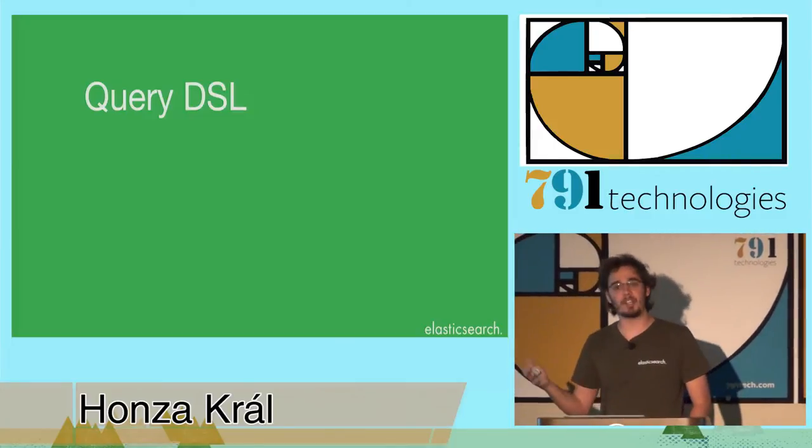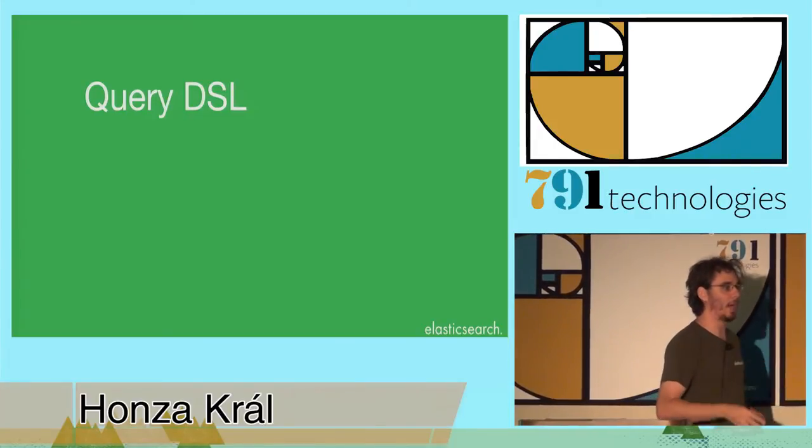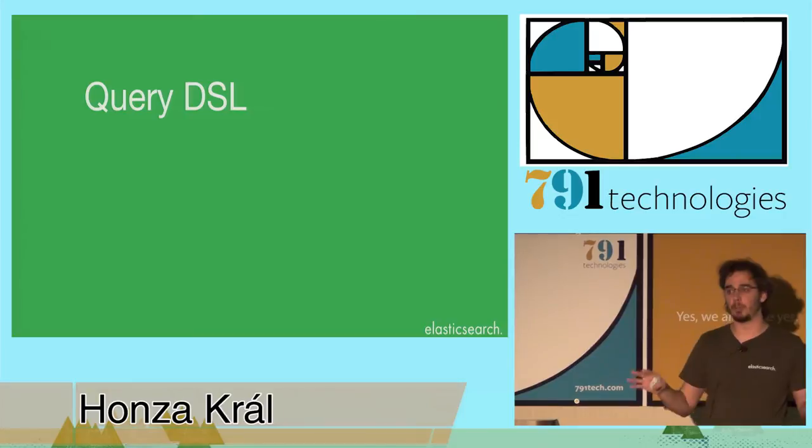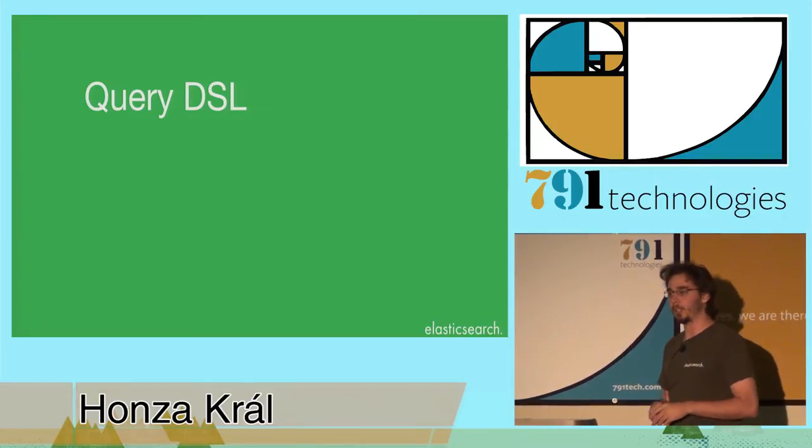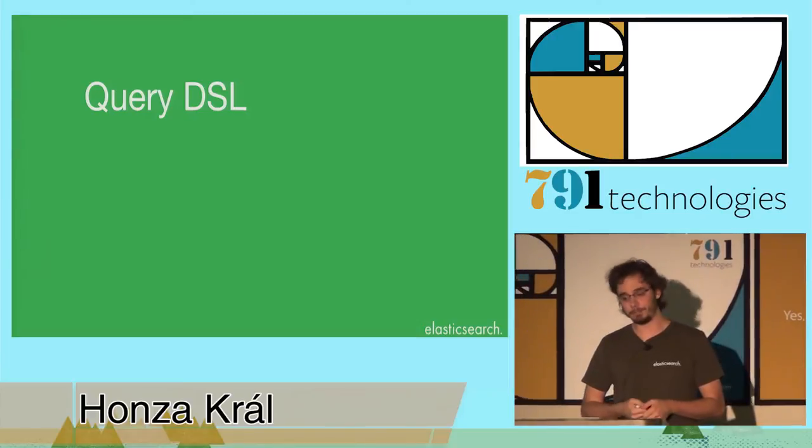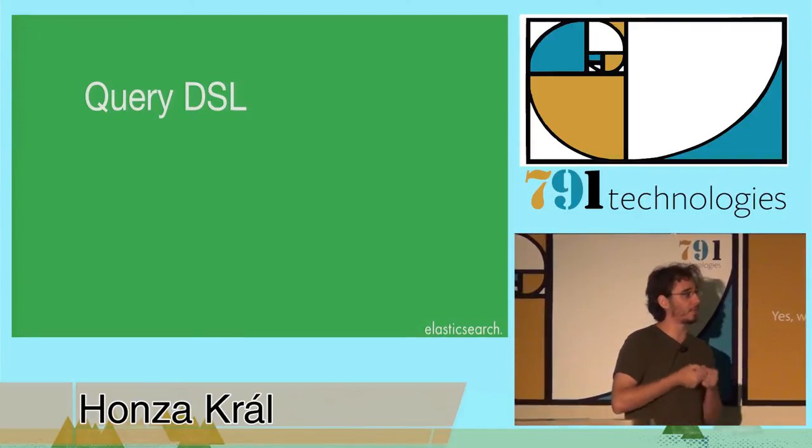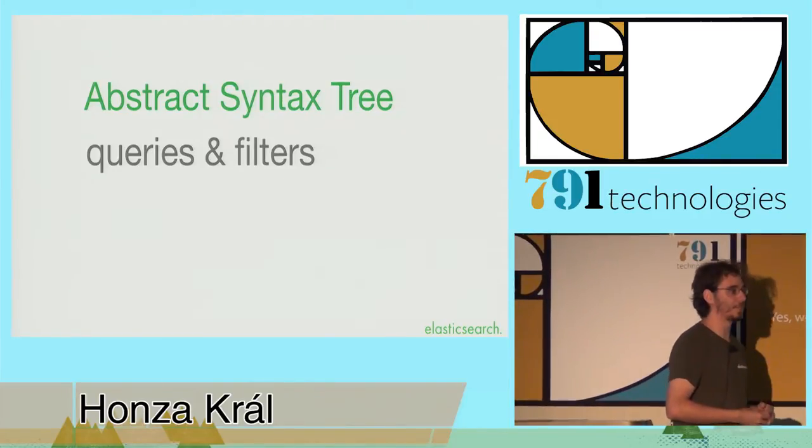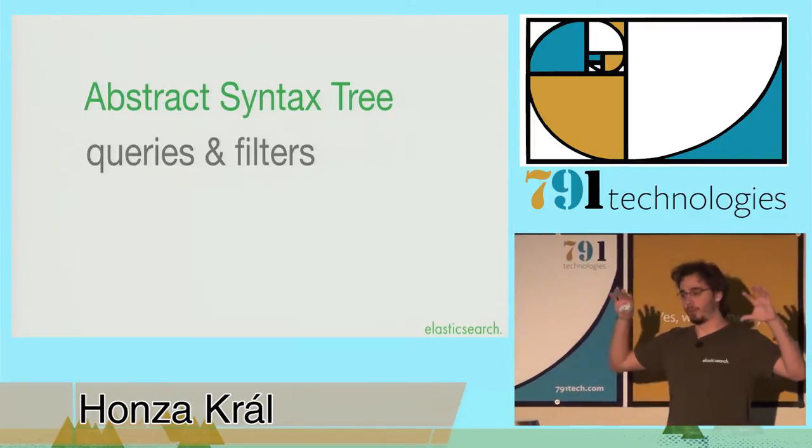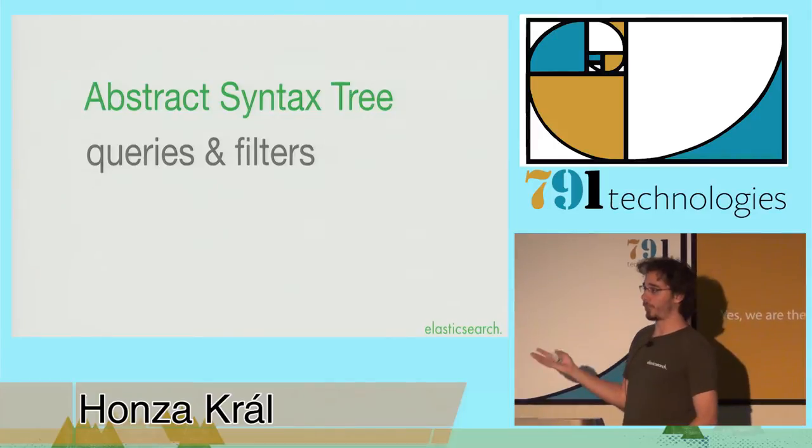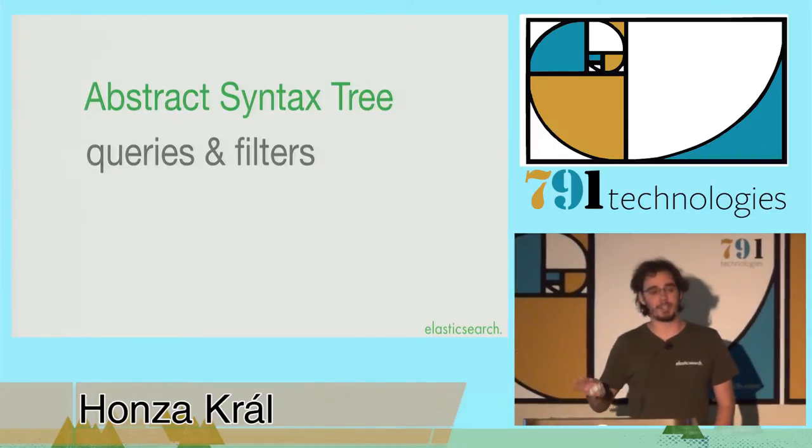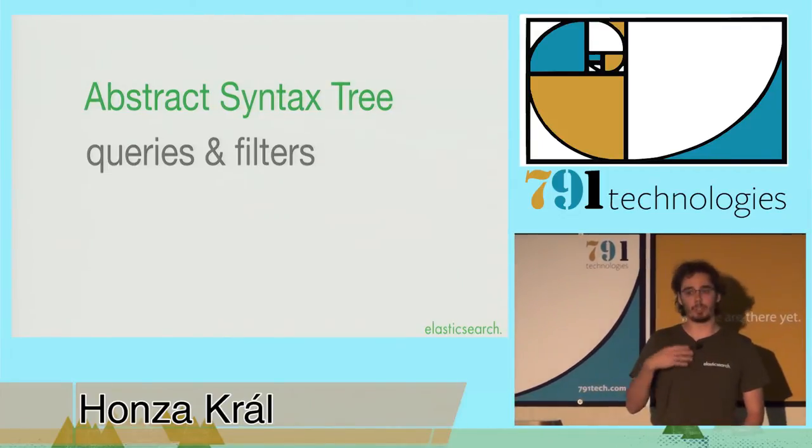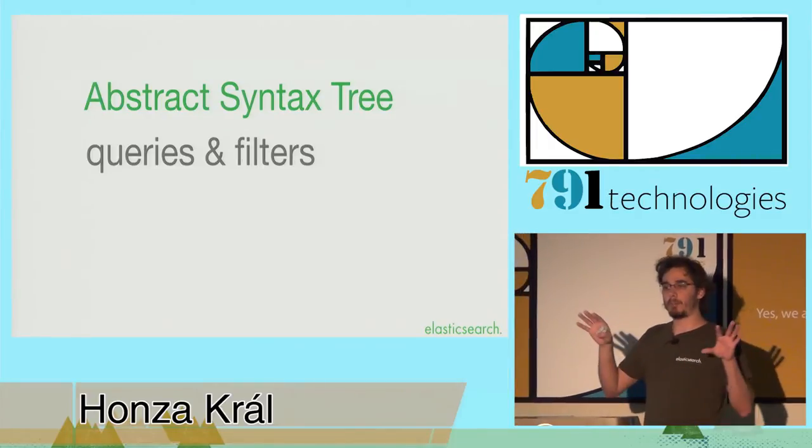So I've talked about queries, and so what do they look like? How do we query Elasticsearch? Elasticsearch is HTTP and JSON. So everything we do is HTTP and JSON. So if you want to query, you send JSON over HTTP, surprisingly. And the JSON that contains the query is essentially an abstract syntax tree. It is essentially a serialized version of an expression tree that contains, amongst other things, but the most important ones are queries and filters.